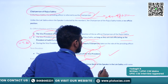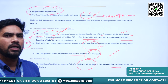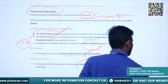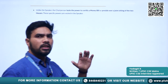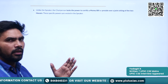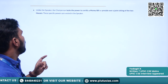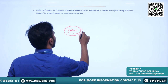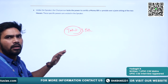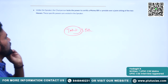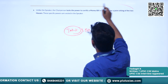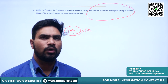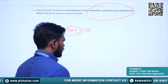When it comes to powers and functions, the chairperson of the Rajya Sabha closely mirrors those of the speaker of the Lok Sabha. The exceptions are in cases of money bills, where the speaker of the Lok Sabha has certain specific powers, and during joint sittings — the speaker will preside over joint sittings and not the chairperson of the Rajya Sabha. In these two cases — money bills and presiding over joint sittings — the speaker of the Lok Sabha has authority.